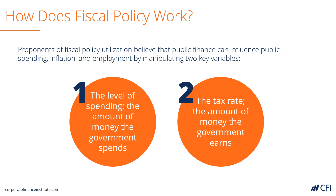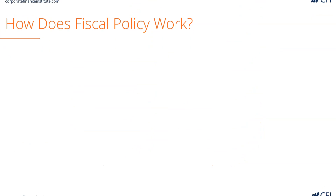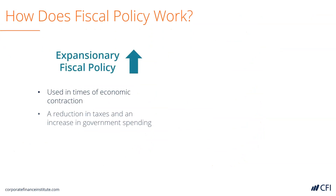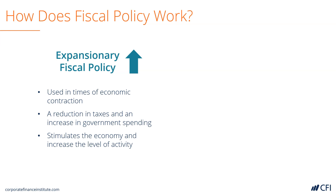But how exactly does this work? First, let's look at expansionary fiscal policy. Expansionary fiscal policy is used when the economy is slowing. The government reduces taxes and increases government spending. This in turn stimulates the economy, reducing unemployment and increasing the level of economic activity such as sales and production.